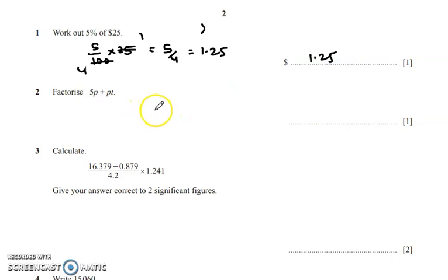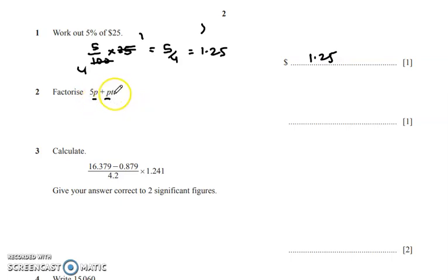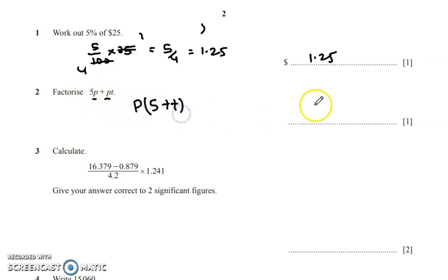Now going to the next one: factorize. What is common for these two terms? I can see p is common. Other than p, they don't have any common factor. So we take out p, and the answer is p(5 + t).